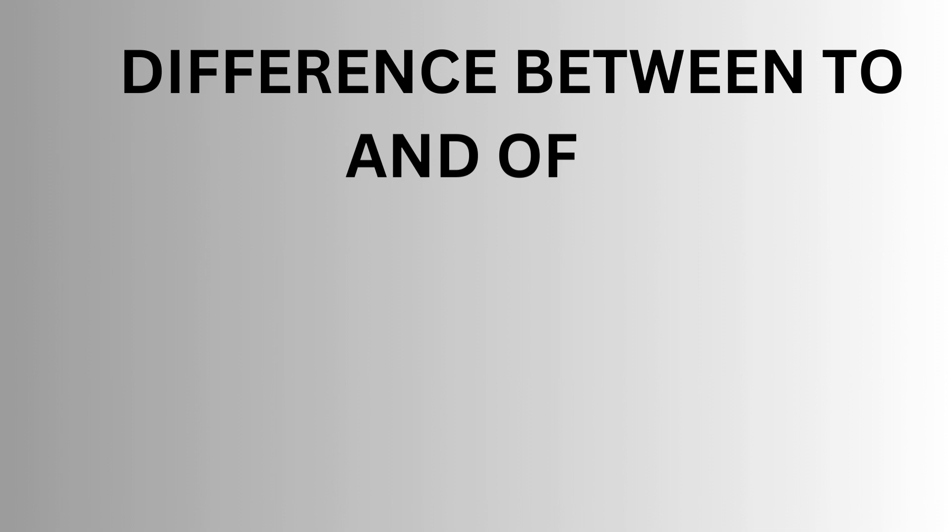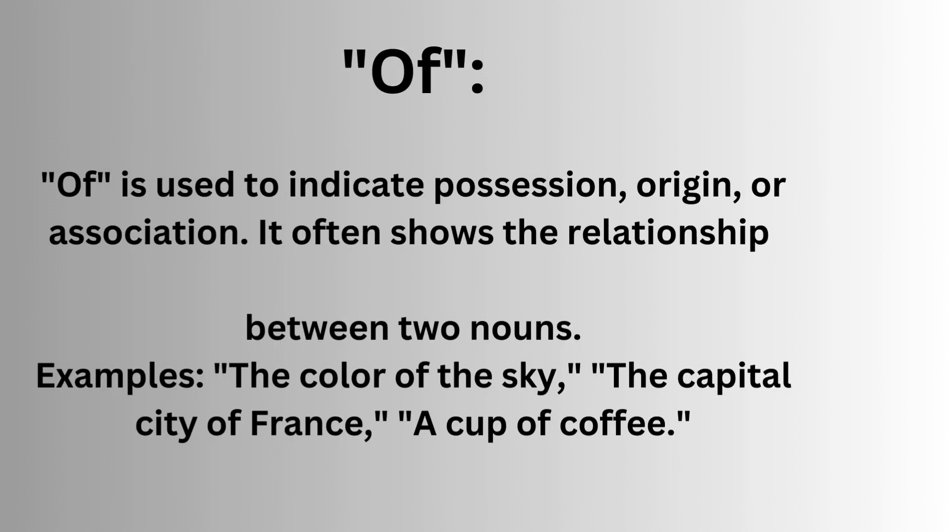Difference between 'to' and 'of.' Usage. 'Of' is used to indicate possession, origin, or association. It often shows the relationship between two nouns.